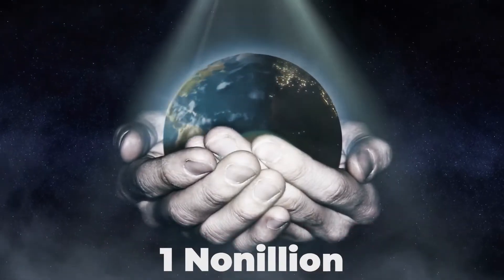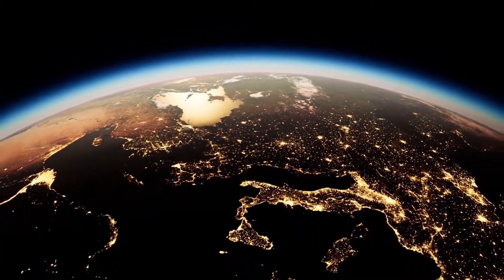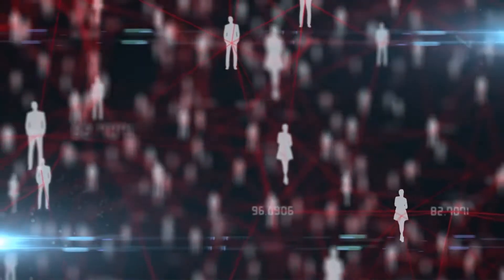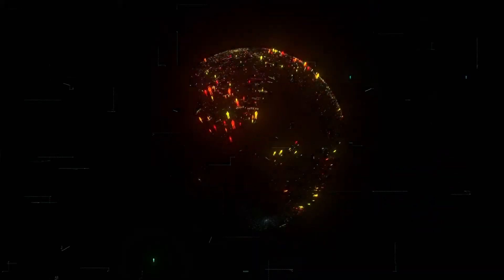What if there were one nonillion people on Earth? For nearly all of human history, there hasn't been that many of us. Around the year zero, Earth's population is estimated to have been 190 million. A thousand years later, it was probably around 250 million.